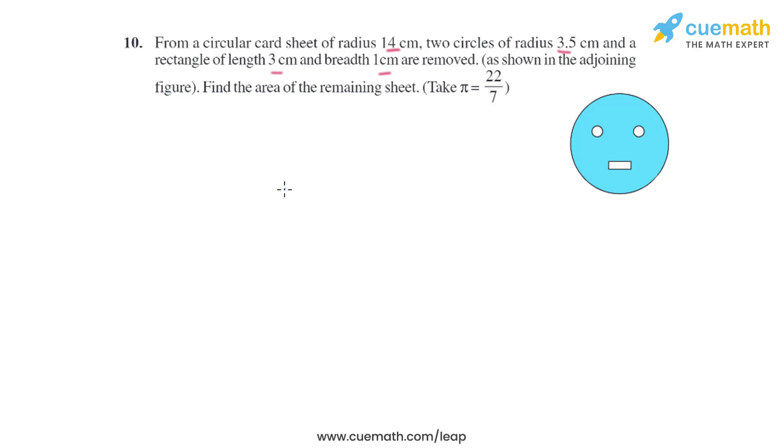A rectangle of length 3 centimeter and breadth 1 centimeter is removed, so basically we need to subtract the area of these two circles and rectangle from the area of the circular sheet of radius 14 centimeter. So let's find the area of the remaining sheet.